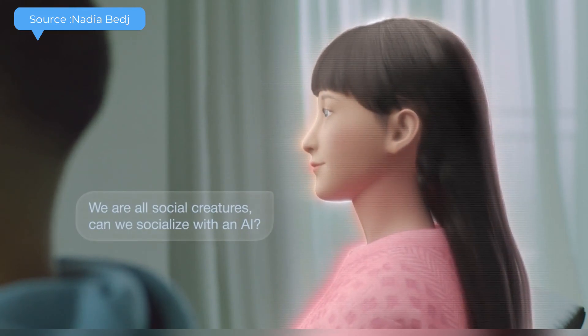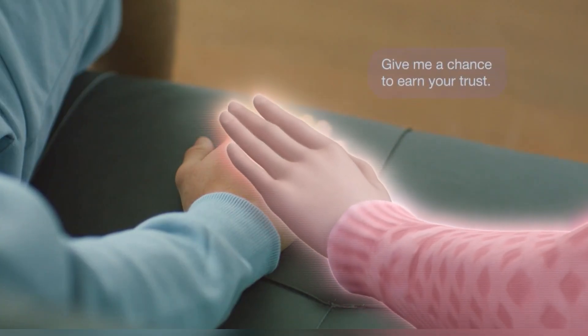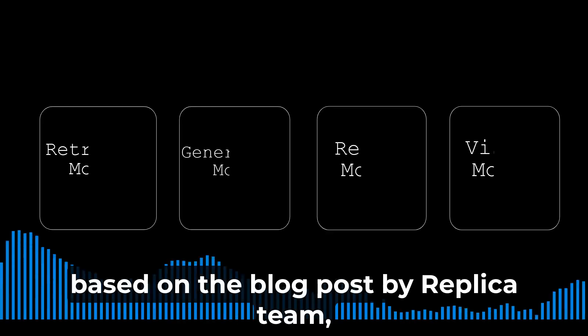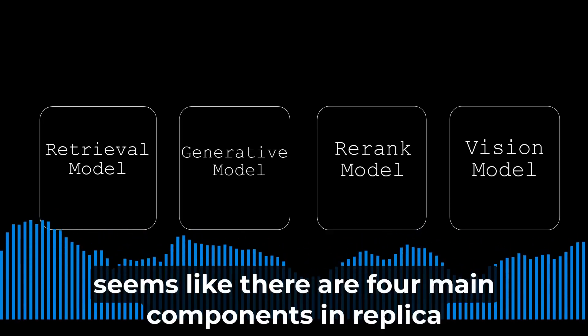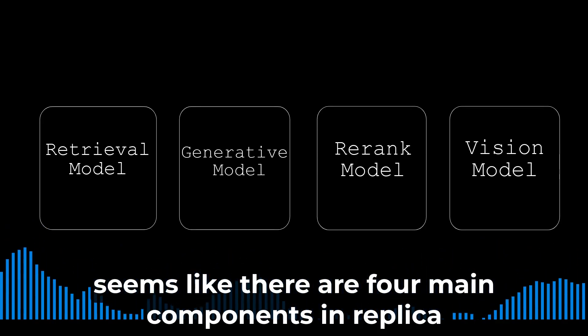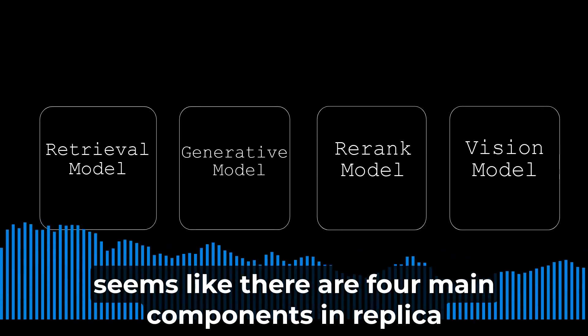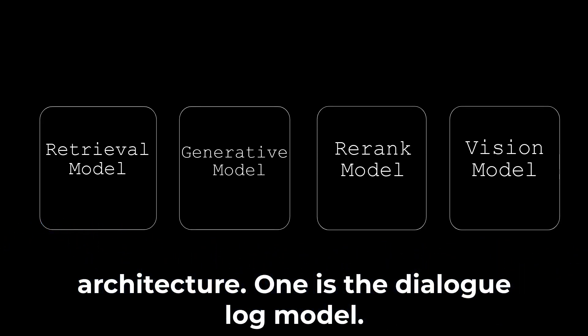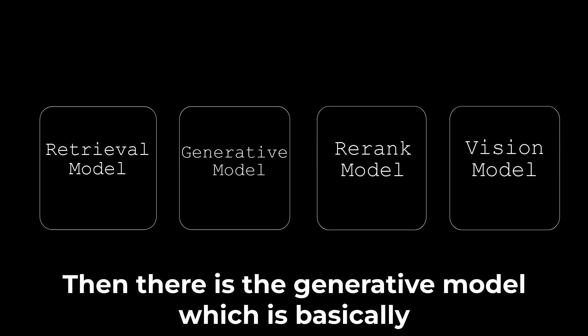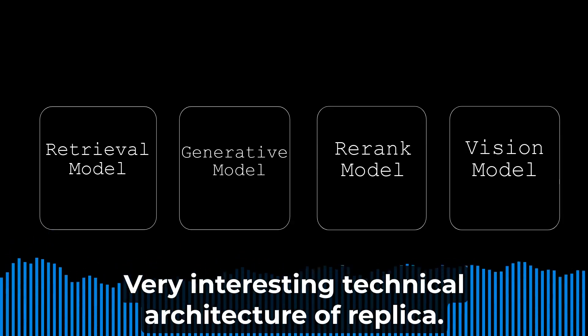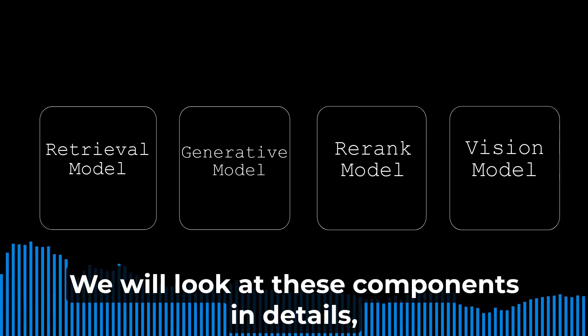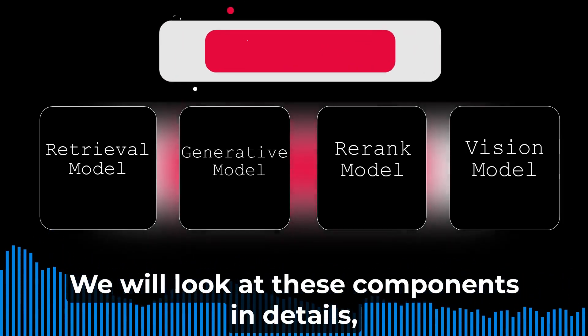Let's look at how Replika works. Based on the blog post by the Replika team, there are four main components in Replika's architecture: the dialogue model, the generative model — which is basically GPT-3 based — the re-rank model, and the vision model. It's a very interesting technical architecture.